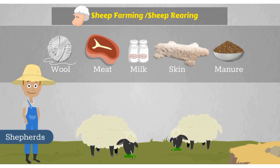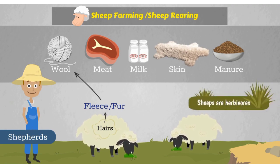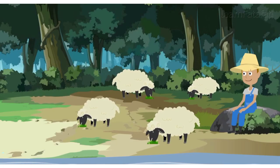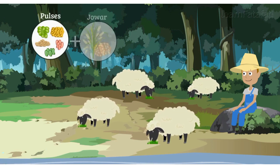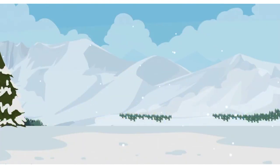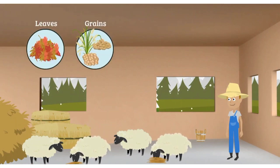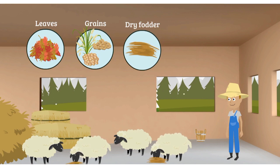The people who rear sheep are known as shepherds. The body of the sheep is covered with hairs known as fleece or fur, and we obtain wool from fleece. Sheep are herbivores - they feed on grasses and shepherds bring them for grazing. They also feed upon a mixture of pulses, jowar, oil cakes, and minerals. When winters start, shepherds keep the sheep in a shelter and give them leaves, grains, and dry fodder to eat.